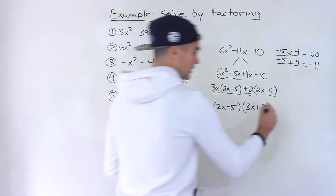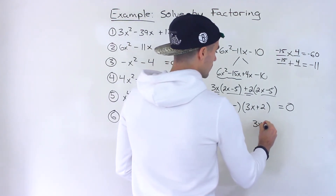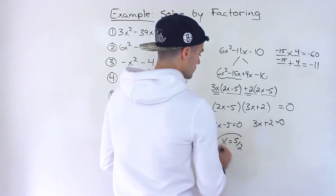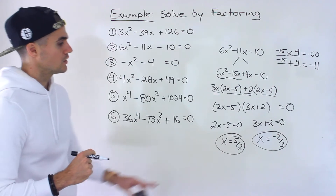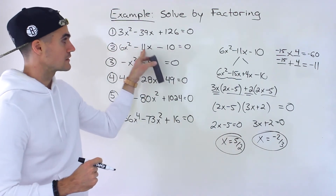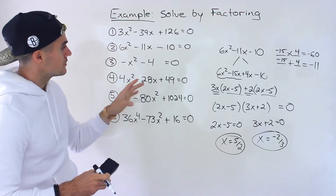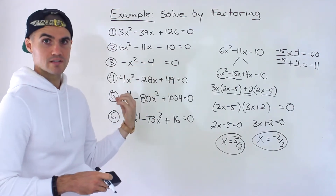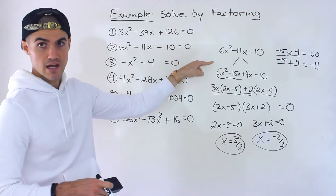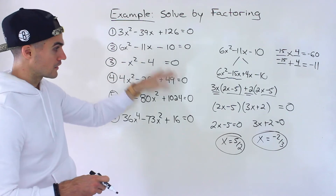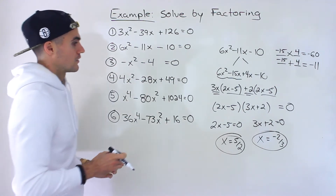This is an equation, so we solve for x. Setting 2x minus 5 equal to zero gives x equals 5 over 2, and setting 3x plus 2 equal to zero gives x equals negative 2 over 3. Those are the two solutions. You can always check by plugging each value back in to verify the left side equals the right side. Also note that these equations could have terms on both sides — for example, 6x squared equals 11x plus 10 — in which case you'd bring everything to one side first and then follow this procedure.